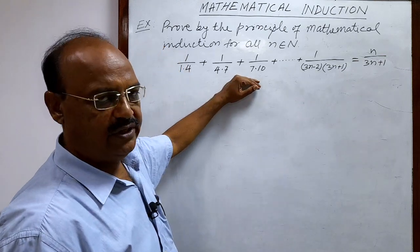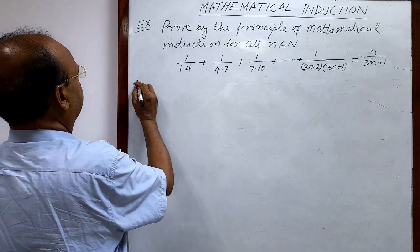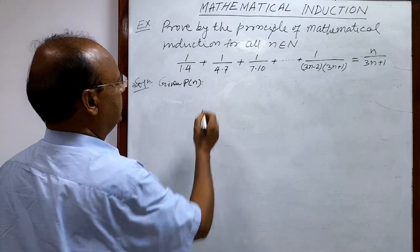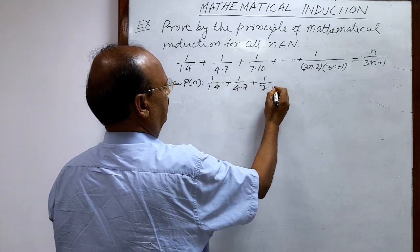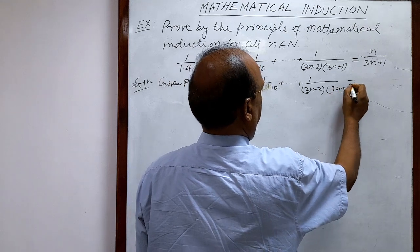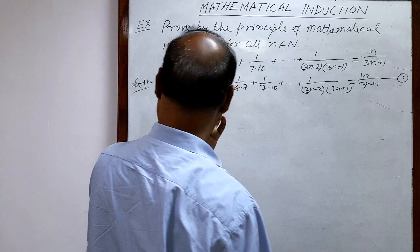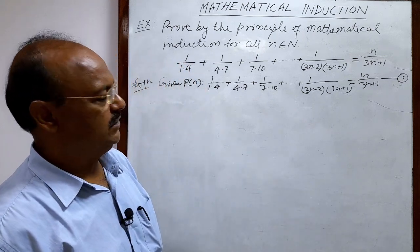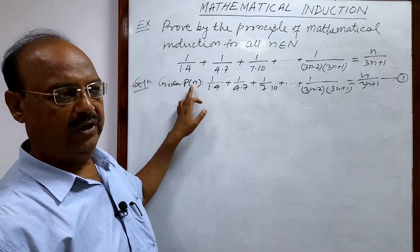This is the mathematical statement given here and we have to prove it by the principle of mathematical induction. Let us see the solution. The given statement is denoted by P(n). By the principle of mathematical induction we have to take three steps. The first step is to show that P(1) is true — whenever we put n=1 we get P(1).